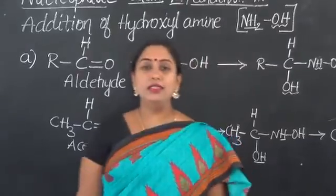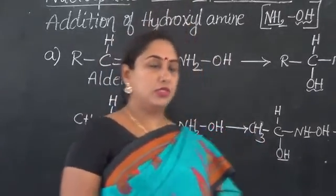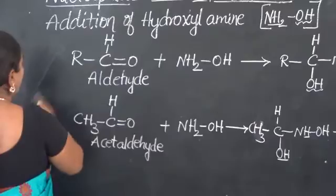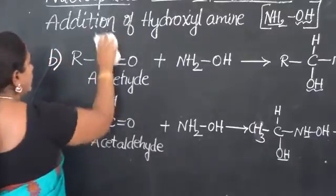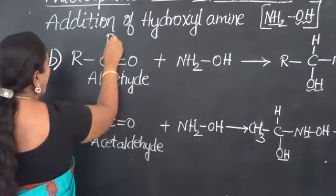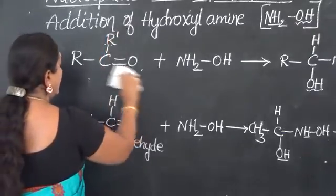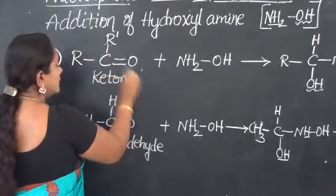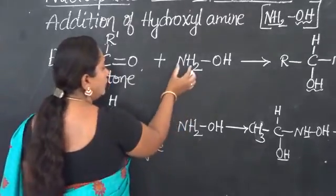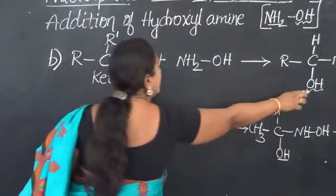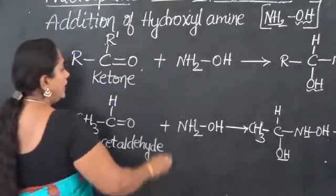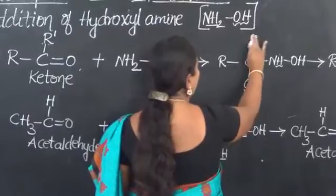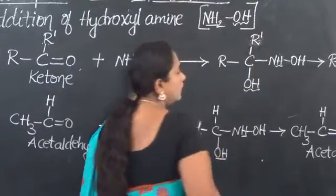A similar kind of addition reaction is also shown by ketones. The general formula of a ketone is RCOR'. Ketones also add with hydroxyl amine in the same manner as aldehydes. One H goes with oxygen and comes out, linked with carbon as OH, and the remaining NH and OH take a linkage — giving a similar compound, except for the presence of one more R group.